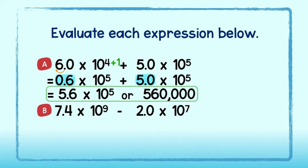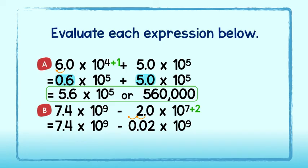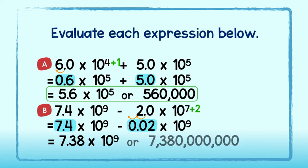For part B, I will choose to add 2 powers of 10 on the right to get 10 to the ninth power. In doing so, I must make the first factor smaller by 2 powers of 10 to get 0.02. I will copy down the rest of the problem. 7.4 minus 0.02 is equal to 7.38. Remember to keep that common power of 10. This is our answer in scientific notation, or 7,380,000,000 in standard notation.